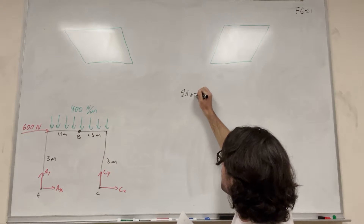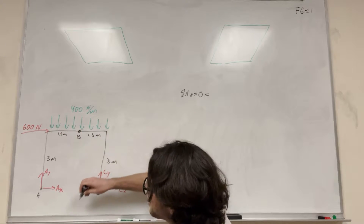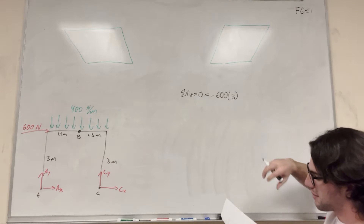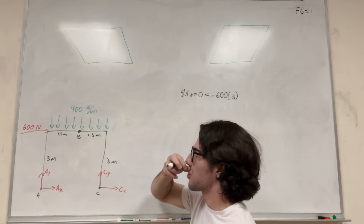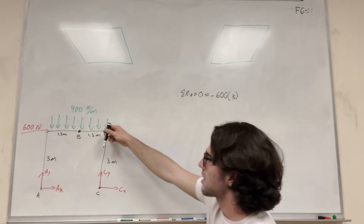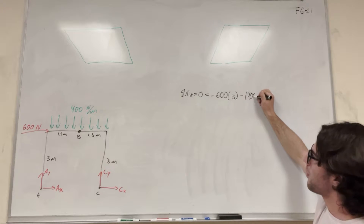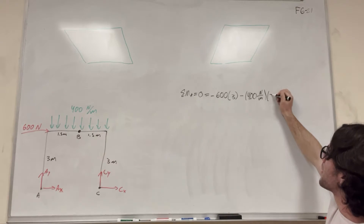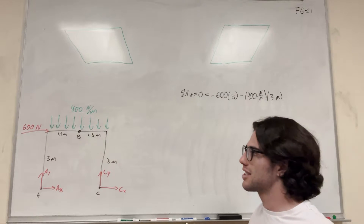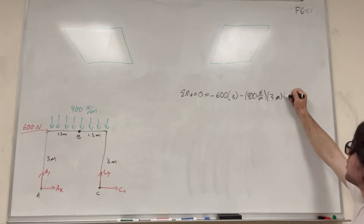So sum of the moments at A equals zero because we're at equilibrium. We have the 600 Newton force — it's going to rotate clockwise, so we subtract 600 times its distance in the Y direction, which is three. Then we have the 400 Newton per meter distributed force acting over three meters, also clockwise, so we subtract 400 times three, multiplied by its center of action at 1.5 meters.